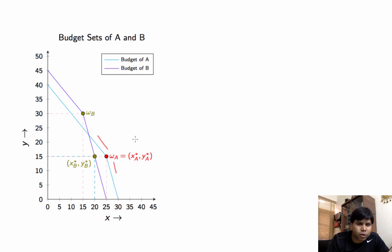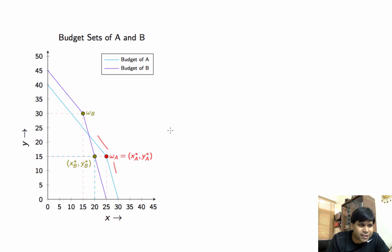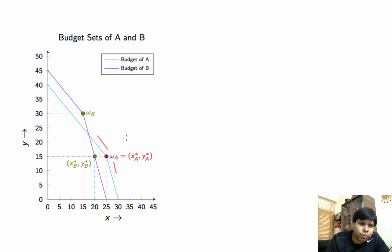We are also given that B chooses XB* and YB* equal to 20 and 15 from his budget set. In this question, we want to know if there exists a utility function such that maximizing it over A's budget gives us XA* YA* as the solution, and maximizing it over B's budget gives us XB* YB* as the solution.